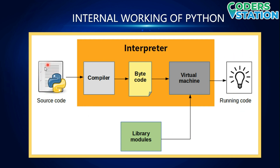First, you write a source code and save it with a .py extension. Then, when you click on the run button, this code is sent to the interpreter. The interpreter then sends the code to the compiler.